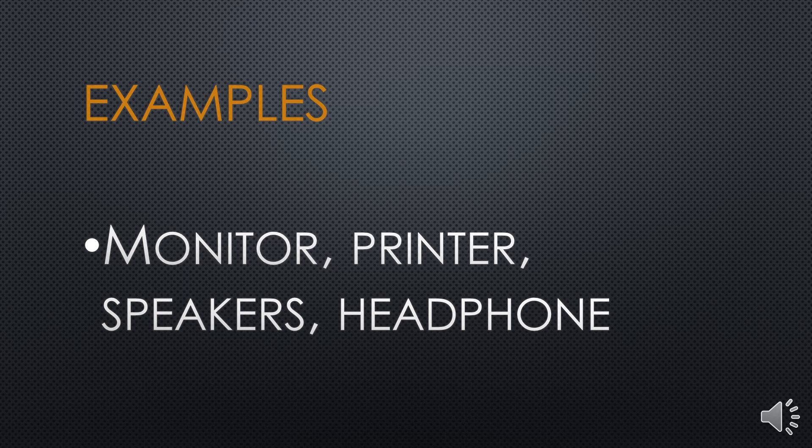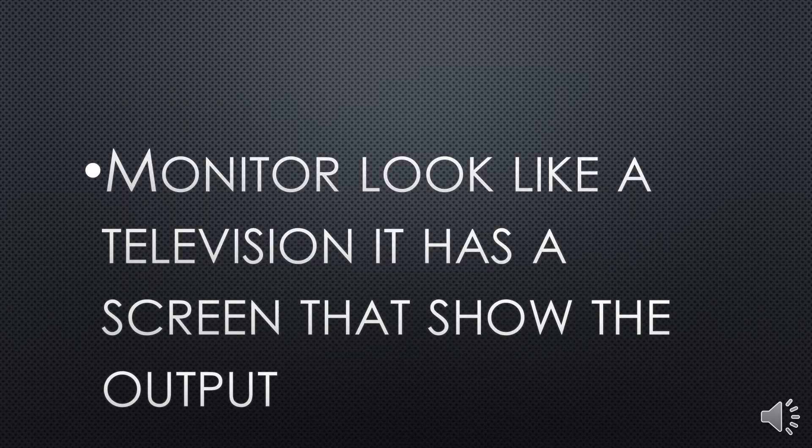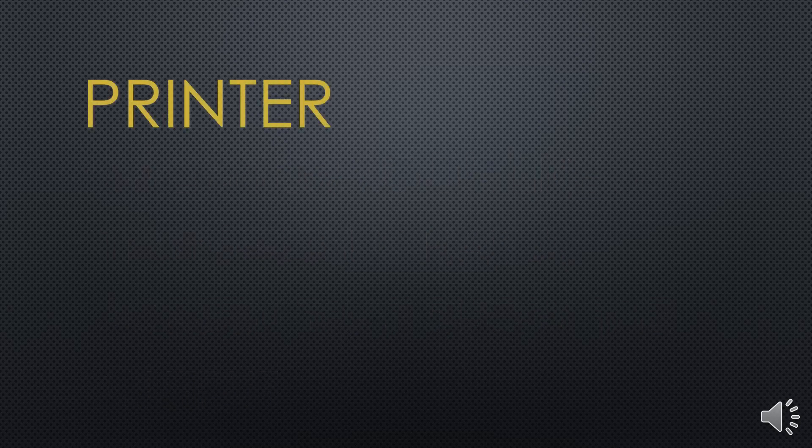Examples of output devices are: monitor, printer, speaker, and headphone. Monitor looks like a television. It has a screen that shows the output — text, pictures, and video.